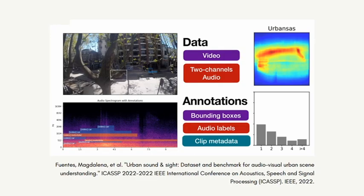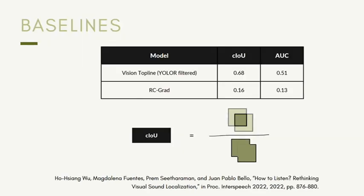We work with the UrbanSUS dataset that has video and stereo audio, and it has strong labels for both modalities. We use two baselines. One of them is RCGRAD, which is the state of the art for our dataset. We also have a strong vision-only topline, which is a pre-trained object detection model limited to only vehicles, with stationary bounding boxes filtered out. This is a fully supervised method, while all our proposed methods along with RCGRAD are self-supervised. Moreover, this method systematically exploits all the biases of the dataset, making it a very strong benchmark to test our methods against.